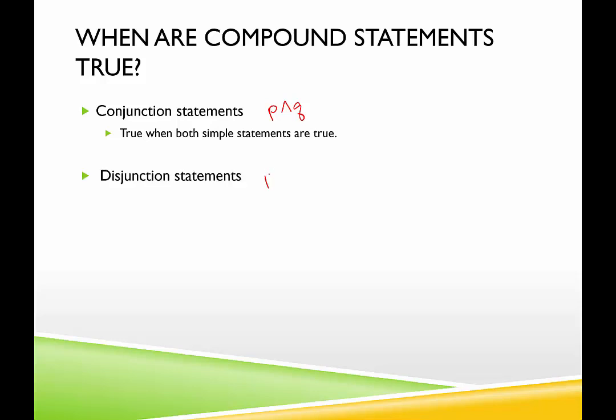A disjunction, that's of the form P or Q, and a disjunction is true when either simple statement is true or when they are both true. So that's true or true, true or false, false or true. Any of those combinations would lead to a true disjunction.